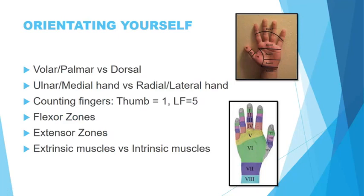Let's start to orientate ourselves to the areas of the hand — what we are talking about. Where's your volar palmar side of your hand and where's your dorsal side? If you look at your palm, that's quite obvious. It's where you see your fingerprint side as well as the lines. That is called the volar or palmar side.